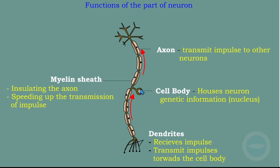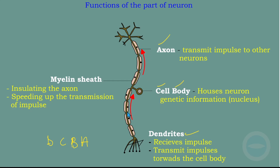We have the cell body — inside the cell body there is a nucleus, so the cell body houses the neuron's genetic information, since the nucleus carries genetic information. Then we have the dendrites: the dendrites receive impulses and transmit them towards the cell body. The impulse enters the neuron via the dendrites first, then passes to the cell body, and then to the axon — D, C, B, A — this is the direction of the impulse inside the neuron.